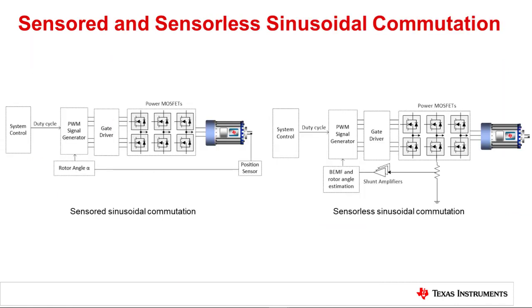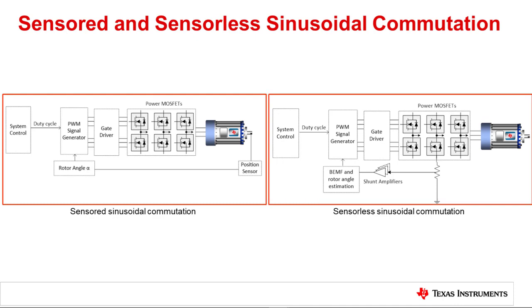This slide shows the block diagram of sensored and sensorless sinusoidal commutation. In sensored sinusoidal commutation, we use position sensors such as encoders and resolvers that generate rotor angle as output. The PWM signal generator takes rotor angle and duty cycle as inputs and calculates switching times T1, T0, and T2 of all six FETs to commutate the FETs. In sensorless sinusoidal commutation, the back EMF voltage and rotor angle is estimated by measuring the phase currents using shunt resistors and shunt amplifiers.